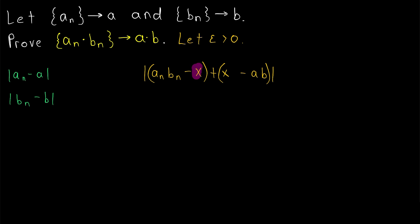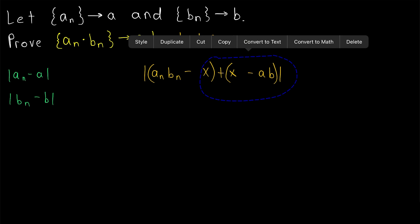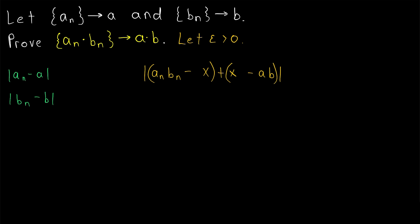The question is: what should we subtract and add? Naturally it should consist of things we've already introduced — a, b, aₙ, and bₙ. Furthermore, we might suspect it should be a product of two things, since it's being paired with products. If we make it a product, it should have something in common with aₙbₙ and something in common with a·b. Those clues lead us to try subtracting a·bₙ and adding a·bₙ, and then we'll see if that turns out to be useful.